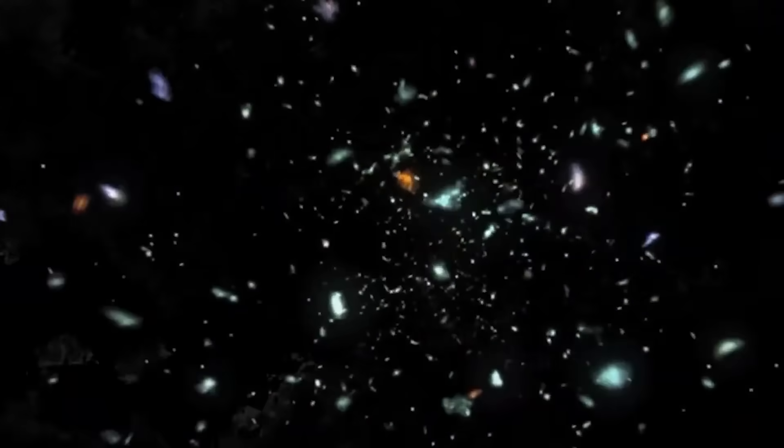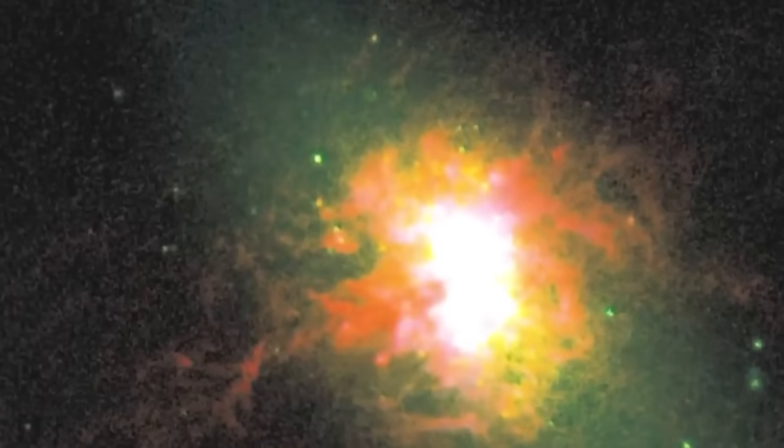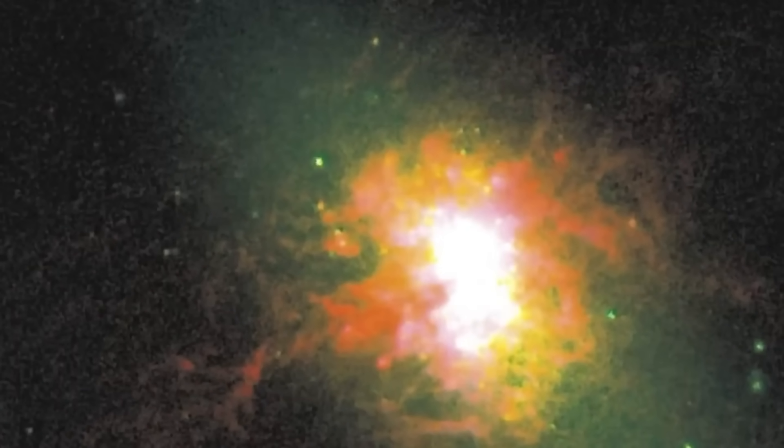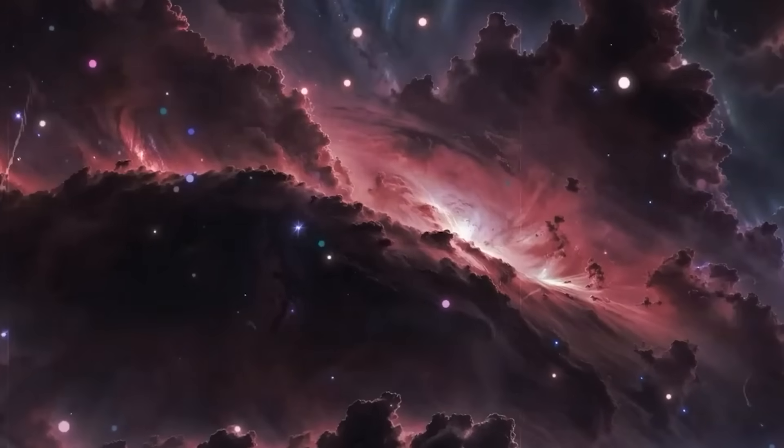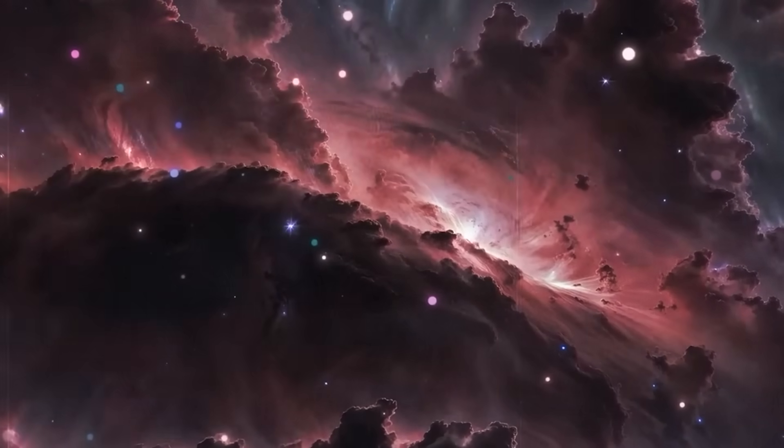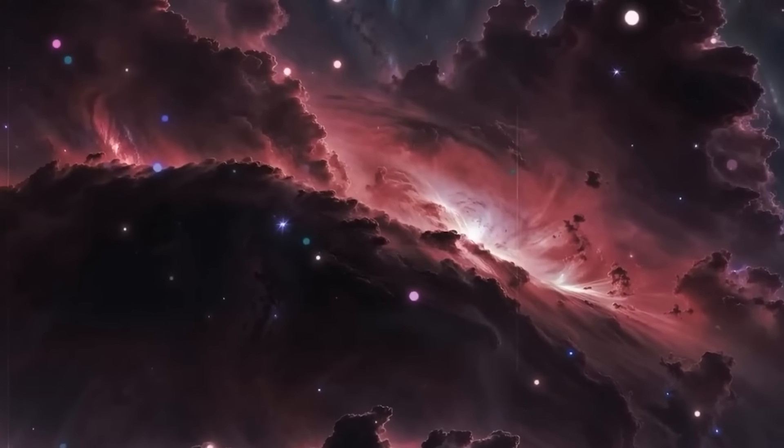The energy from a collapsing universe could seed the next one with the materials needed to form galaxies almost instantly. If true, the 15 galaxies Webb has seen could be survivors, remnants from a cycle that ended long before ours began.